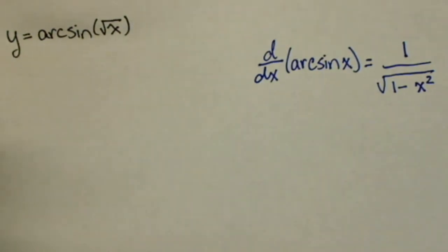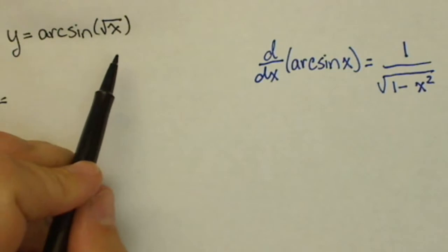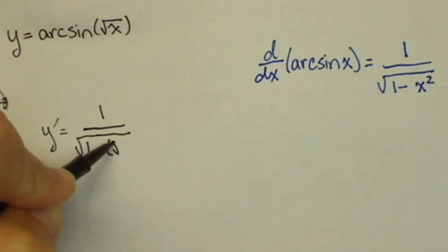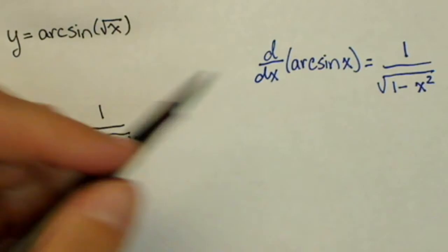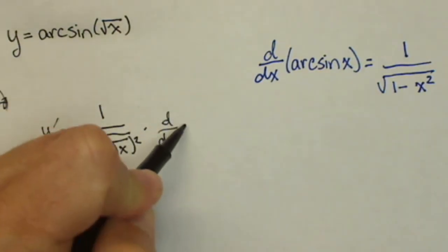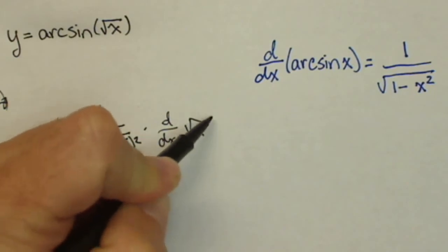So our y prime, we're going to have a chain rule here. Our y prime is going to be equal to 1 over the square root of 1 minus the square root of x squared, so that's replacing our input there, times the derivative with respect to x of the square root of x.